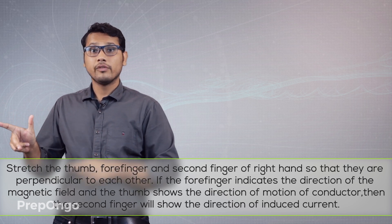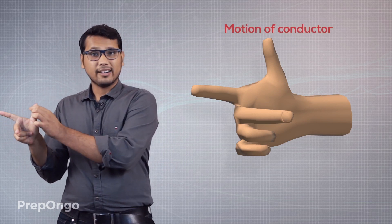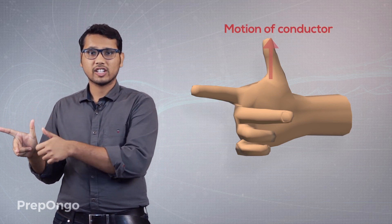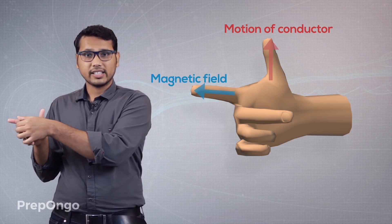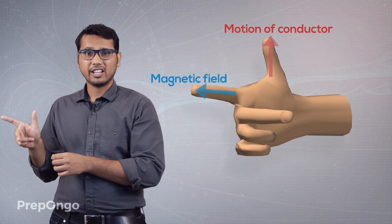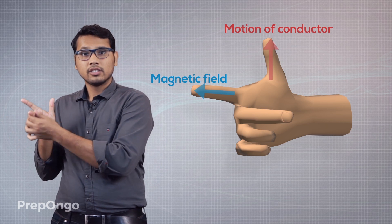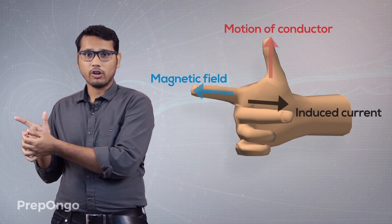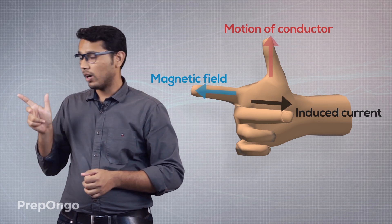Now apply it such that your thumb points in the direction of motion of the conductor, your forefinger points in the direction of the magnetic field, and then the second finger gives you the direction of the induced current. So let us try to apply this.